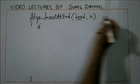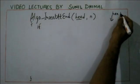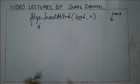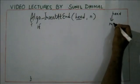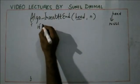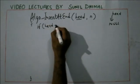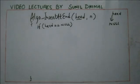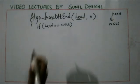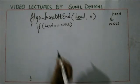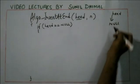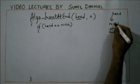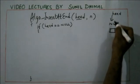So if head equals null, this means the list is empty. If the list is empty, what do you do? You first create memory — create a node and assign head to that node. Head should be pointing to that node. So you dynamically create a new node.